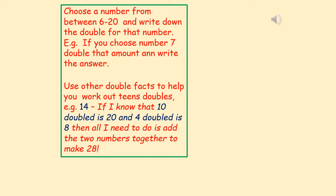Here's an extra activity. Choose any number from between 6 to 20, and you can do this a few times, and write down the double for that number. So for example, if you choose number 7, double it, and then write down the amount. When you get to working out the teens doubles, what you need to do is use your number facts. So if I know that if I'm going to choose 14, I know that 10 doubled is 20, and 4 doubled is 8. Then all I need to do is add the two numbers together to make 28. So double 14 would be 28. Have a go.